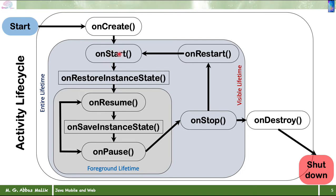When you start a particular activity, first of all it will execute the onCreate method, which has been defined in that activity class. After onCreate, once all the instances of different GUI components have been created inside RAM, it will execute the onStart method, then onRestoreInstanceState, then onResume, then onSaveInstanceState, onPause — and we can go between these two. If a dialog box appears in front of the activity and the activity is still visible in the background, this cycle of onResume and onPause continues.